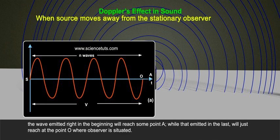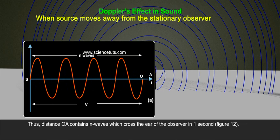We are crossing the year of the observer in one second. The wave emitted right in the beginning will reach some point A, while that emitted in the last will just reach at the point O where observer is situated. Thus, distance O-A contains n waves which cross the year of the observer in one second.